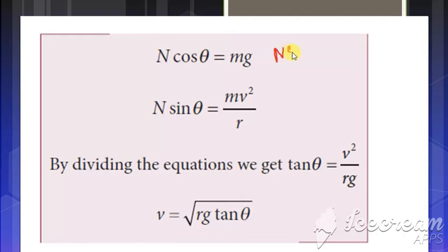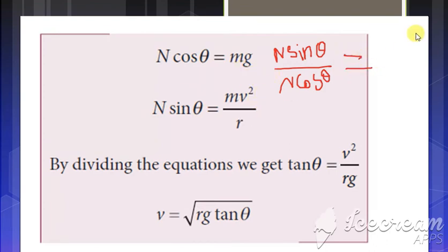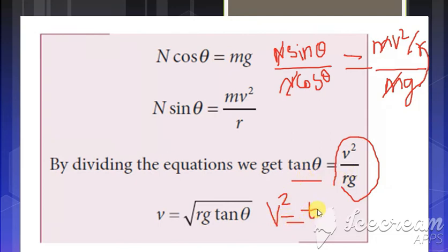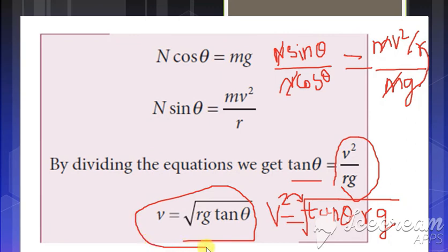Now divide these two equations. We write N sin theta divided by N cos theta, which equals mv squared over r divided by mg. The N cancels and the m cancels, giving v squared divided by rg. Sin theta by cos theta can be written as tan theta. So tan theta equals v squared divided by rg. When you need v squared alone, bring rg to the other side to get v squared equals rg tan theta, and therefore v equals the square root of rg tan theta.